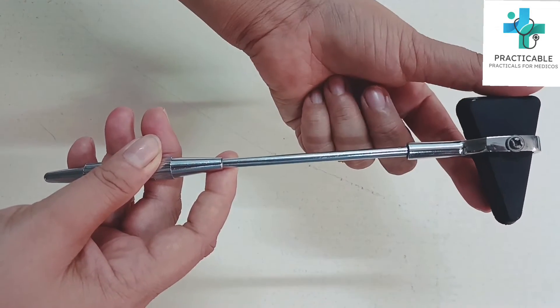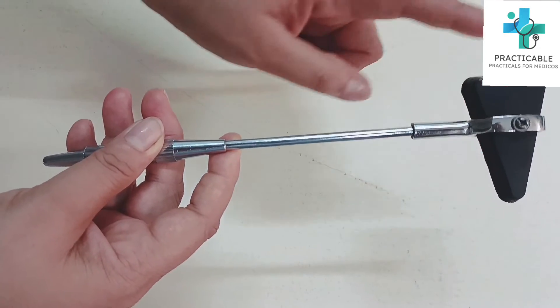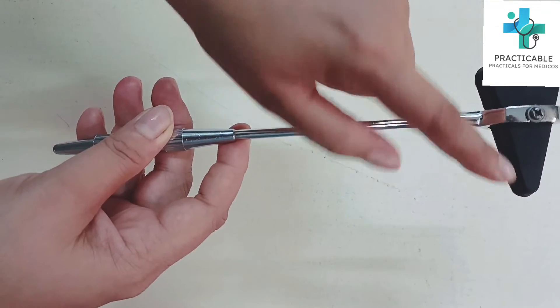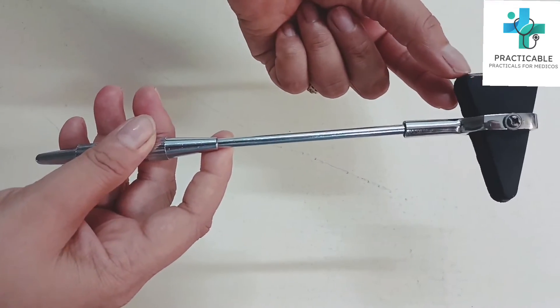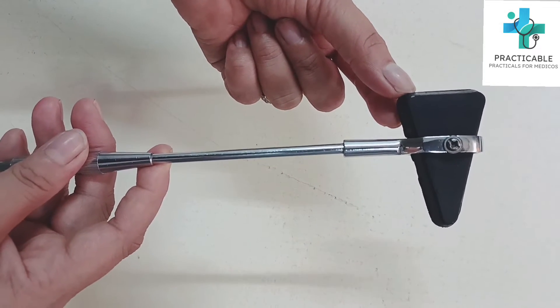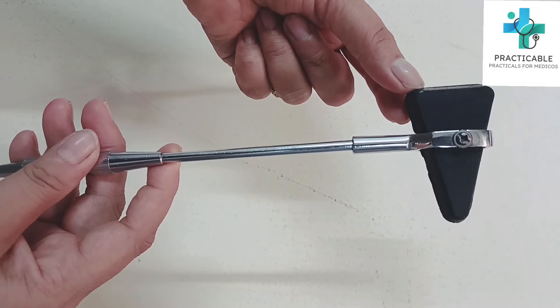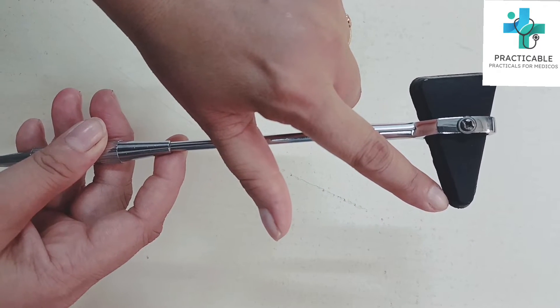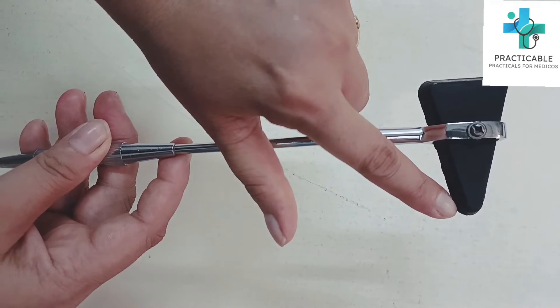The rubber piece has two ends - one broad end and one pointed end. The broad end is used when the muscle tendon belly is broad and thin, like the triceps. The pointed end is used when the tendon is stout and narrow, like the biceps.